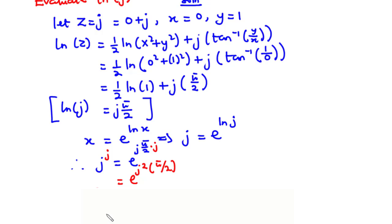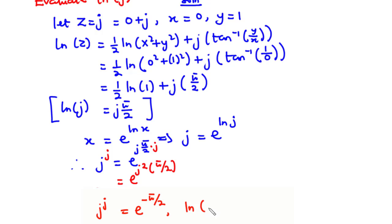So j to the j equals e to the exponent j squared times pi over 2. Since j squared equals negative 1, this becomes e to the power negative pi over 2. Therefore, ln of j to the power j is equal to negative pi over 2.